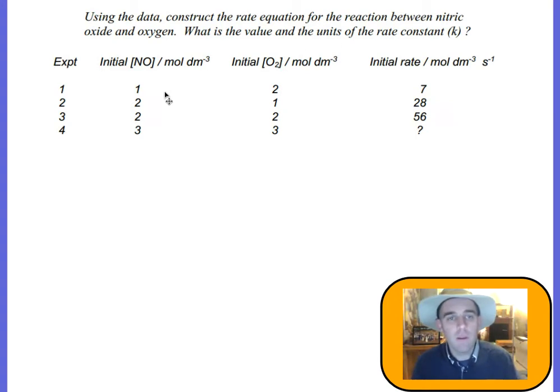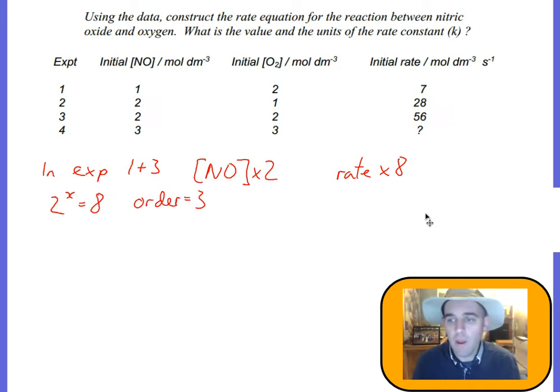First of all, if you want to work out the order for NO, you can see that from experiments 1 and 3, the concentration of NO has doubled and the concentration of O2 has stayed the same. It's important that when I look at one particular concentration, the other concentration stays the same. Otherwise we don't know which one has an effect on the rate. I wouldn't look at 1 and 2 because O2 concentration has changed as well.